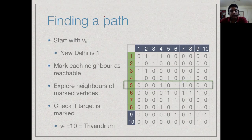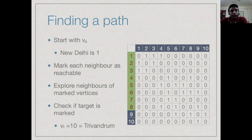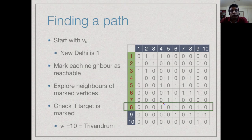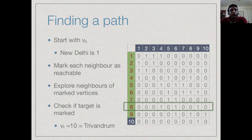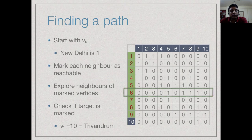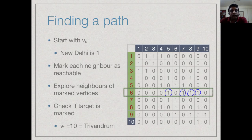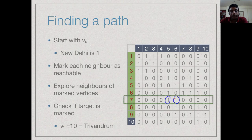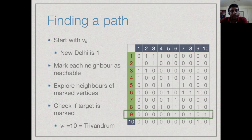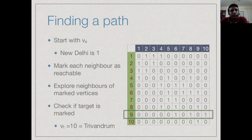Looking at vertex 8, it has neighbor 4 already seen and neighbor 6 already seen, but also a new neighbor 9. So we add 9 to the list of vertices reachable from 1. Examining vertex 6, it can reach 5, 7, 8, and 9 — all already known. Vertex 7 reaches 5 and 6, both known. Finally, from vertex 9 we can reach 6 and 8, already known, and a new vertex 10. So we mark 10 as reachable, and the problem is solved — there is a path from 1 to 10.